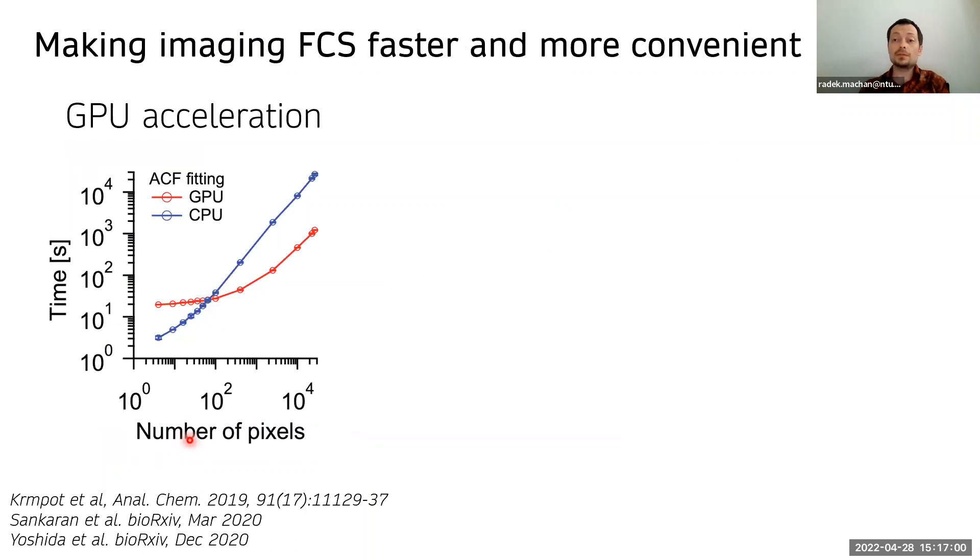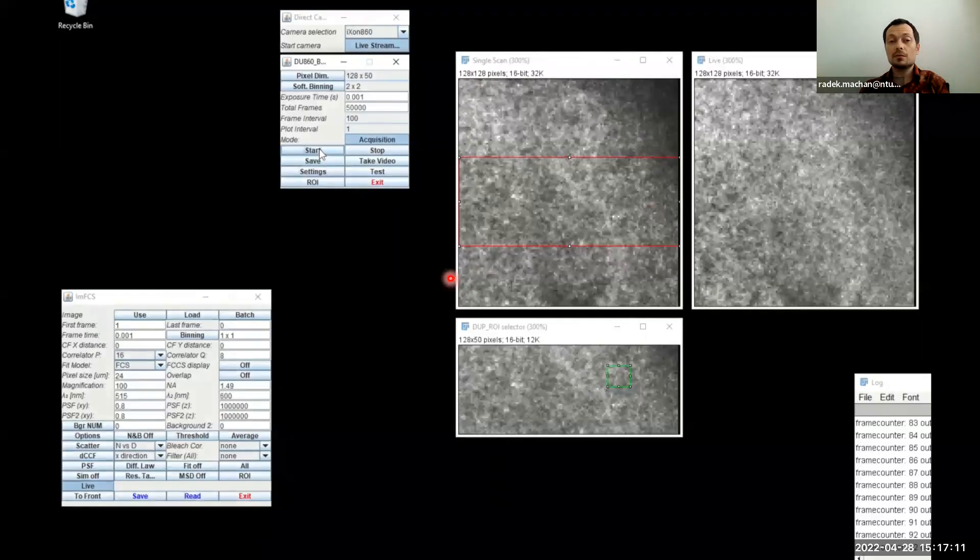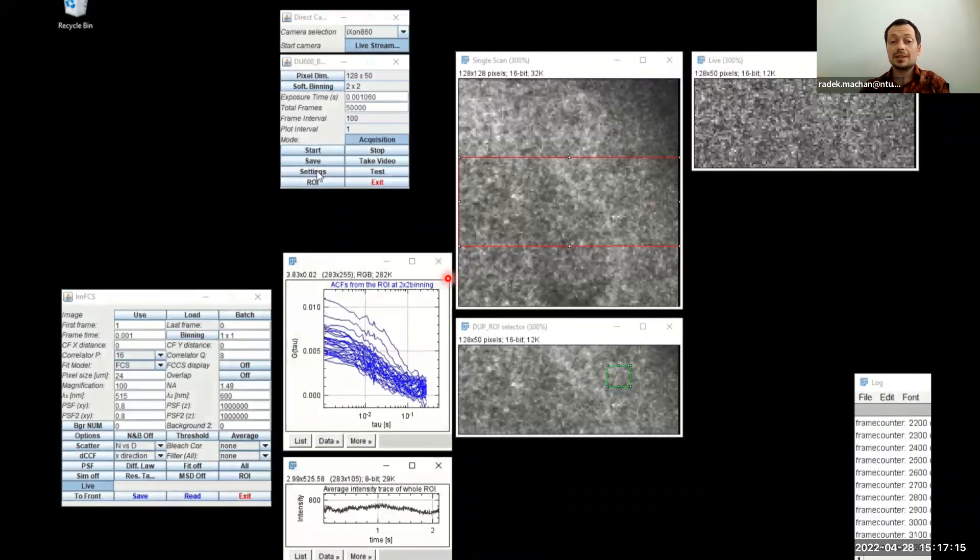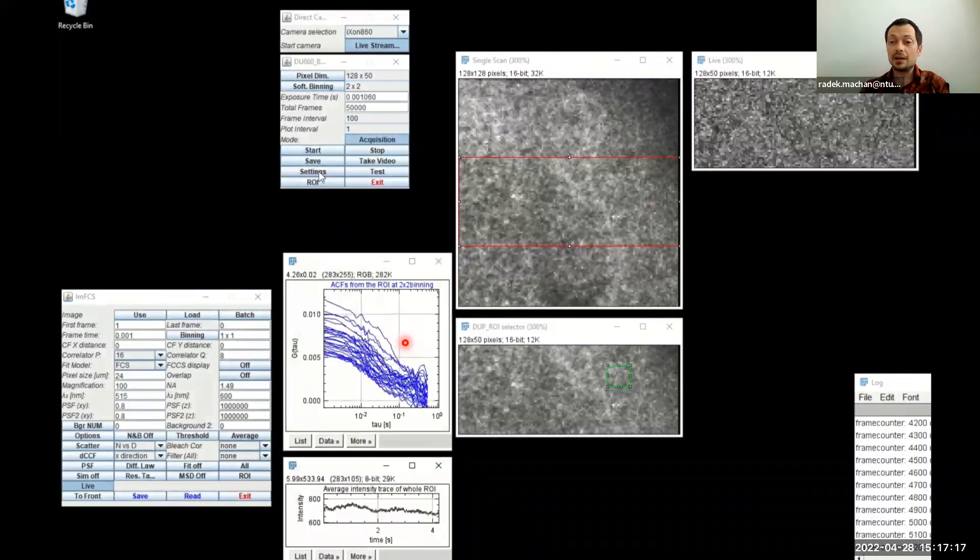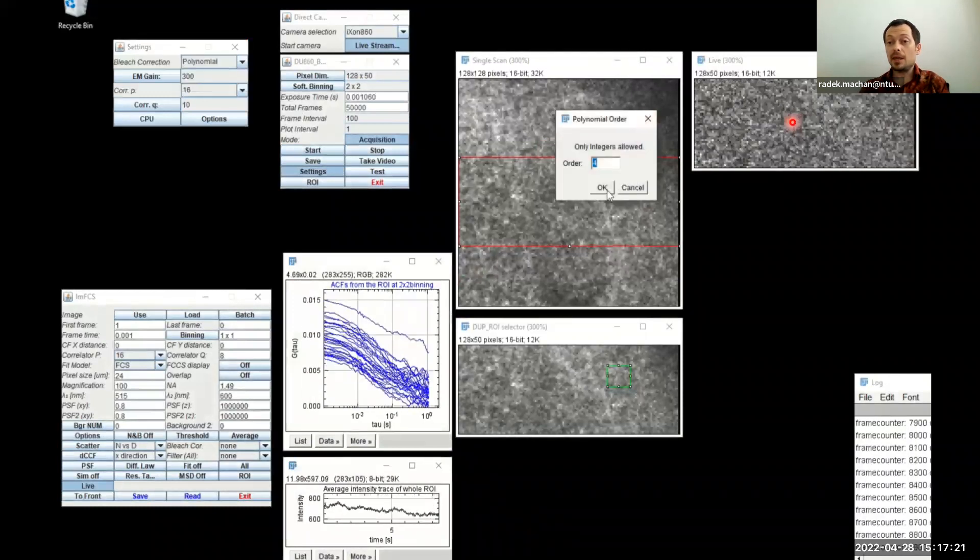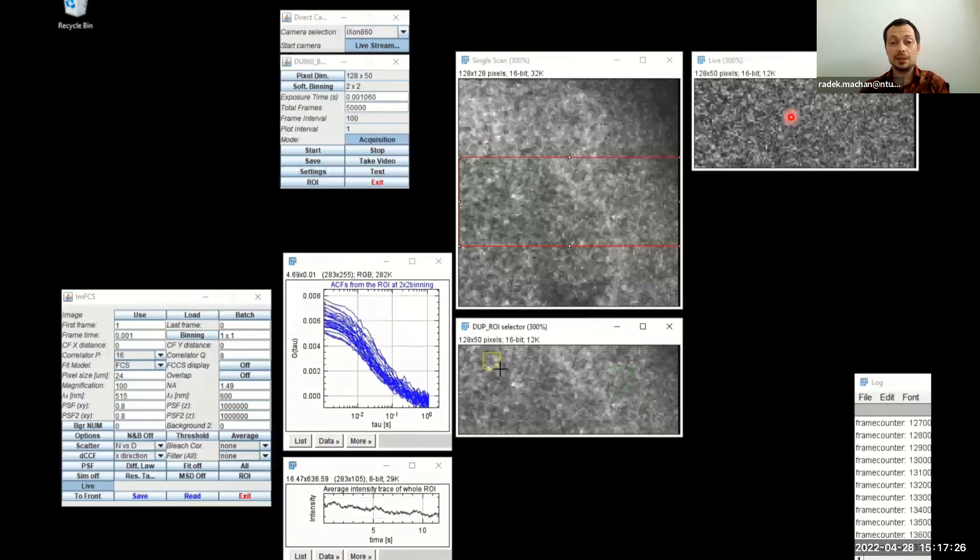The imaging FCS plugin keeps developing. So the latest version supports GPU acceleration as well as direct camera readout. This is very useful for optimizing the experiment because you can see the correlation functions directly while acquiring the images and not only after the acquisition has finished.